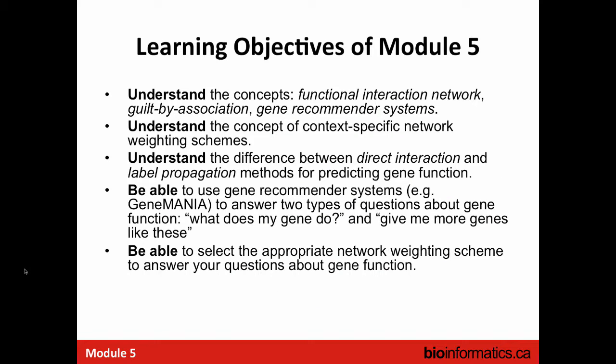Here are our learning objectives. I want you to understand three basic concepts: one is what's called a functional interaction network, the second is guilt by association as a way of inferring gene function, and the third is gene recommender systems. The overall goal is to answer two questions about genes.